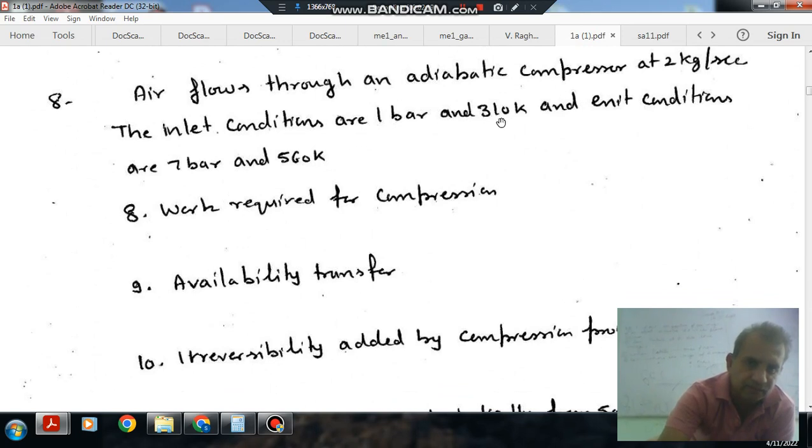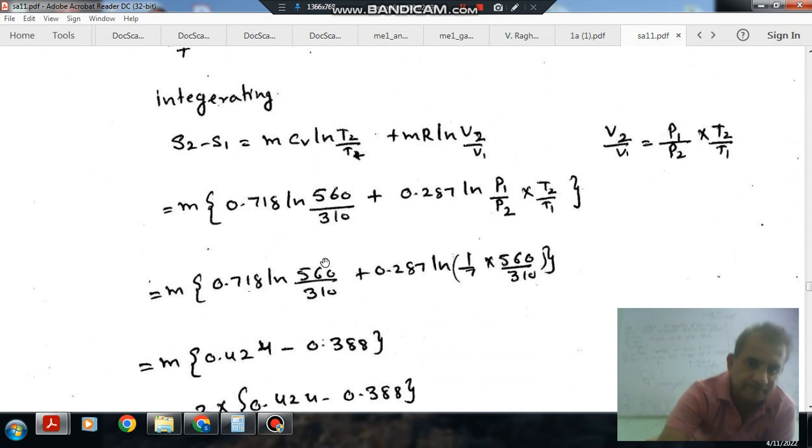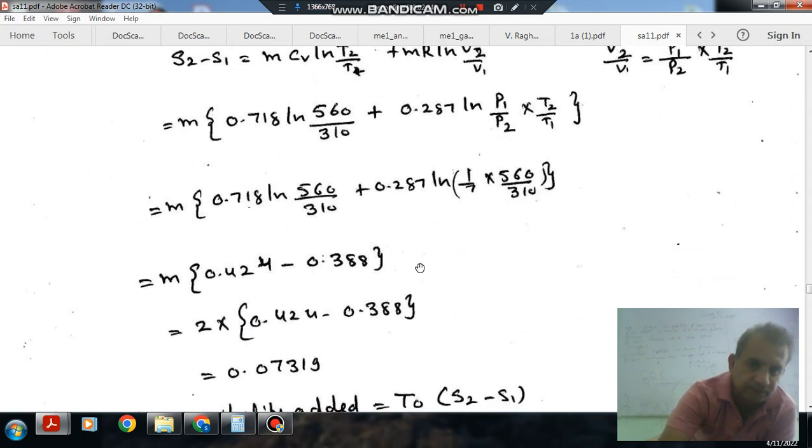We have 7 bar and 560. So, this is 560 by 310 and this is 1 by 7, 560 by 310. So, putting these values...